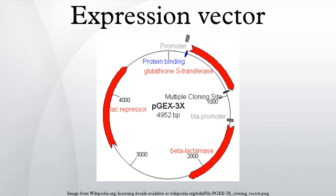Examples of E. coli expression vectors are the pGEX series of vectors, where glutathione-S-transferase is used as a fusion partner and protein expression is under the control of the TAC promoter, and the pET series of vectors which uses a T7 promoter. It is possible to simultaneously express two or more different proteins in E. coli using different plasmids. However, when two or more plasmids are used, each plasmid needs to use a different antibiotic selection as well as a different origin of replication, otherwise the plasmids may not be stably maintained.